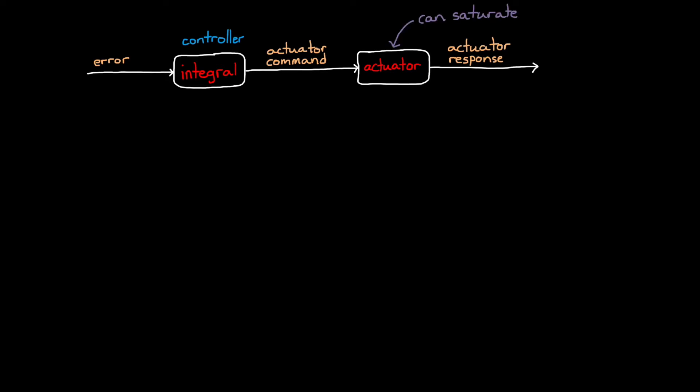We begin by looking at the path the error takes through the integral to generate an actuator command, and then through an actuator to get its response. Imagine a scenario where the actuator can saturate, or another way of putting it where the actuator is not able to follow the command it's given. Picture this. A system is subjected to some continuous non-zero error.